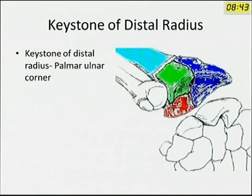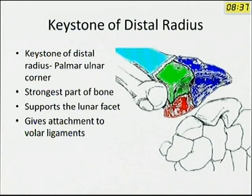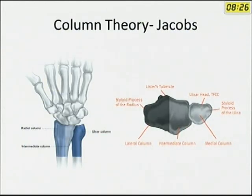The volar-ulnar corner of the distal radius is considered the keystone to the distal radius, as it is the strongest part of the bone, supports the lunate facet, and gives attachment to the volar ligaments. Biomechanically, the distal radius is considered as having three columns: the radial, intermediate, and ulnar column.